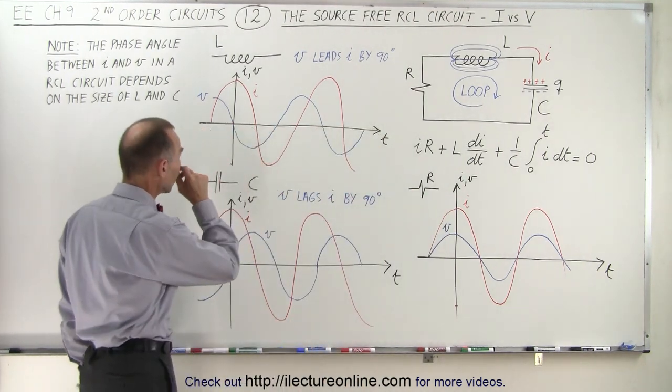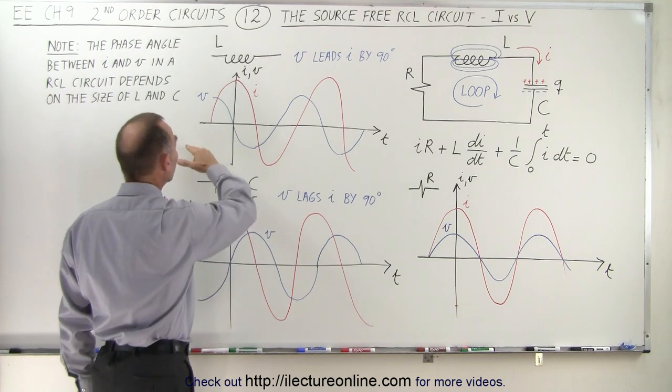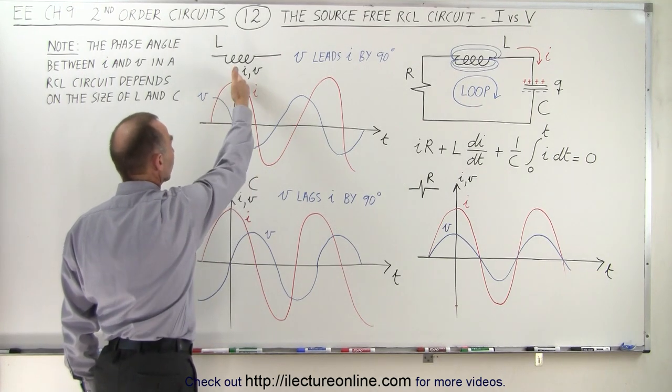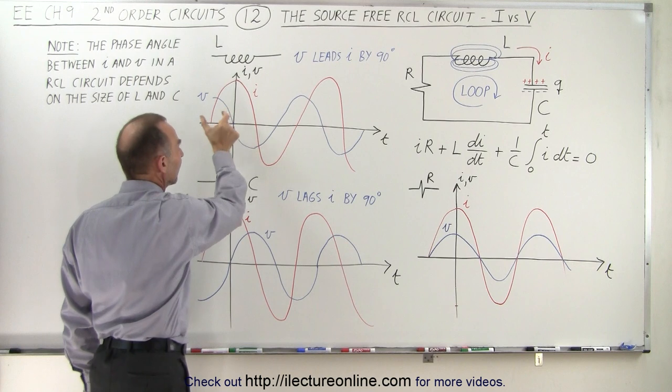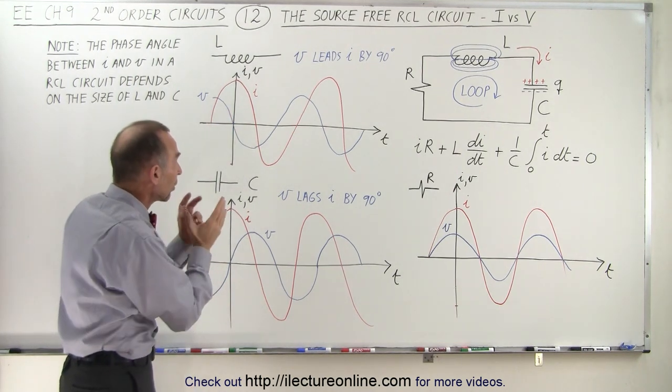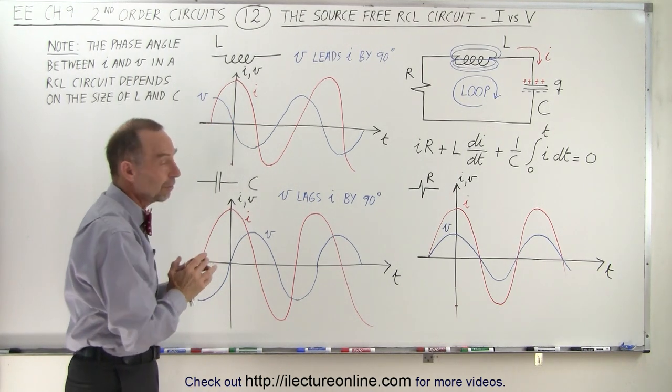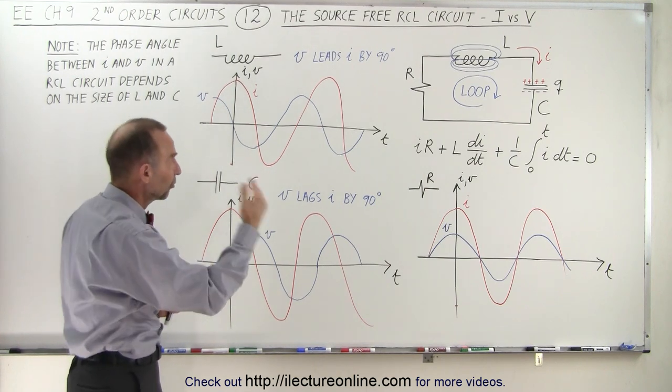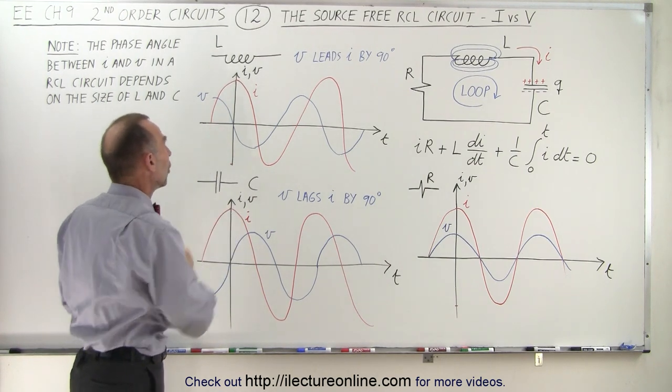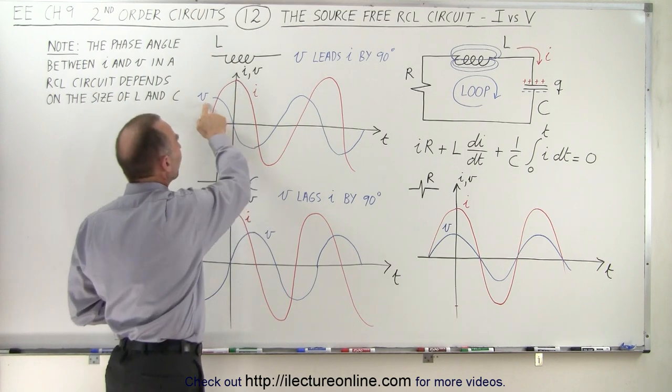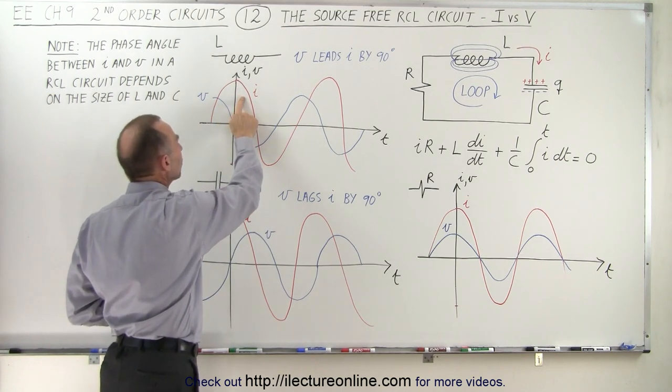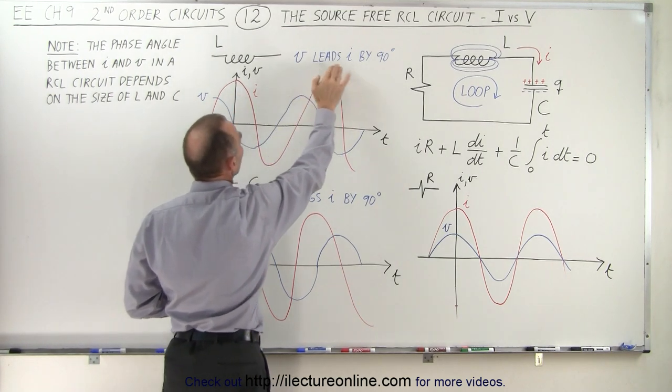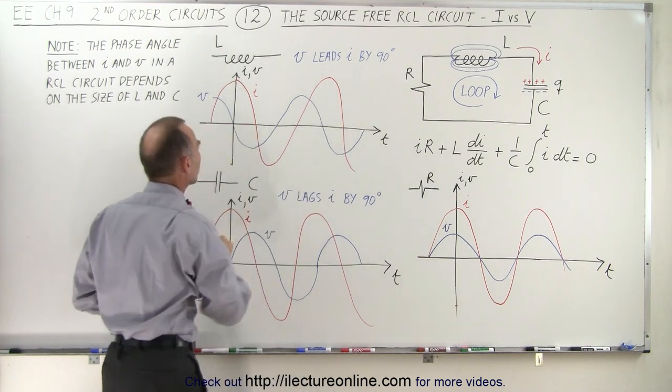Now, across an inductor, notice that the voltage rise comes first, then the current follows later. There's typically a 90 degree difference when we talk about the inductor by itself. So if you have an RL circuit, a resistor and an inductor circuit, this will always be the case. The voltage will lead the current by 90 degrees.